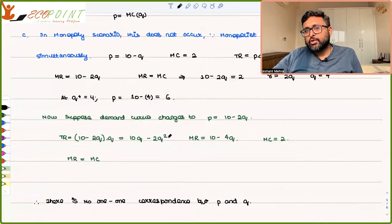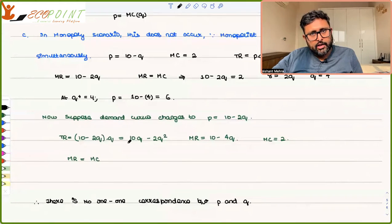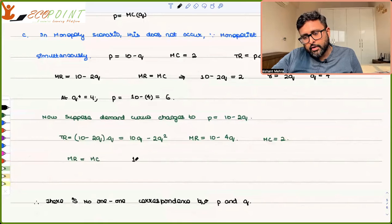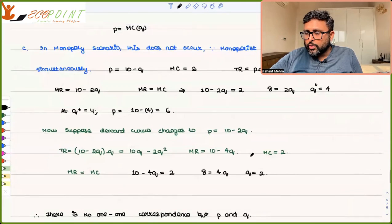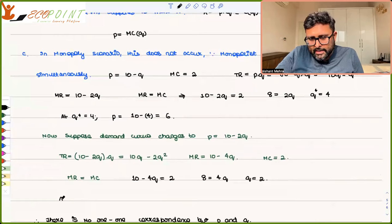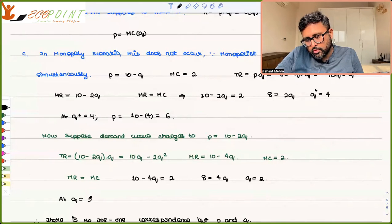Now let's see that demand curve changes to 10 minus 2Q. The moment demand curve changes to 10 minus 2Q, your revenue is what? Price into quantity, which is 10Q minus 2Q squared. MR is going to take it, differentiate this DTR by DQ, 10 minus 4Q. Let's say MC is 2. So again, with MR equals to MC, what will you have? 10 minus 4Q equals to 2. So you will have what? 8 equals to 4Q. So you will have what? Q equals to 2. Now, at Q equals to 2, what is the price? 10 minus 2 into 2, 10 minus 4, which is 6. So you will have to see it.